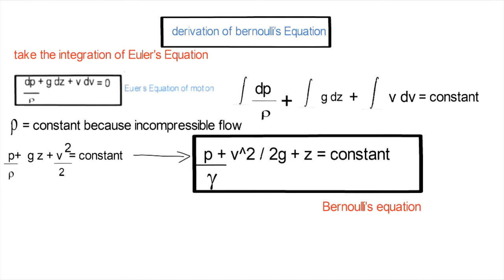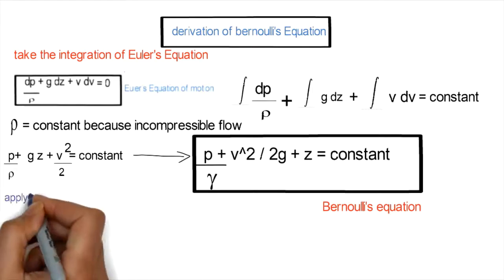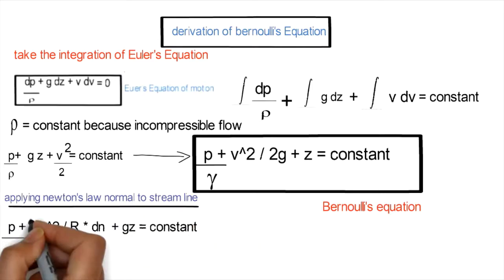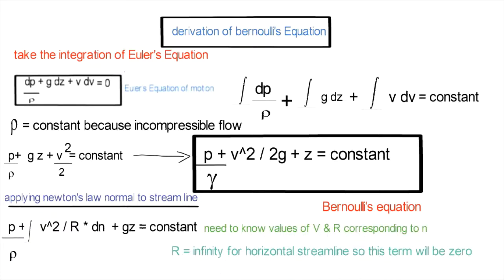Let's apply Newton's second law to the normal direction of the streamline. We obtain: p/ρ plus the integral of V²/R times dN plus g·z equals constant. The problem is that we need to know the values of V and R corresponding to dN, because V and R change with dN. That applies in cases of curved streamlines. But in cases of a horizontal streamline, R will be infinity, so this term becomes zero and is negligible.